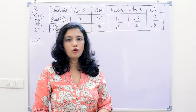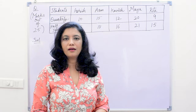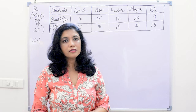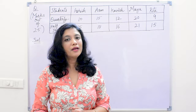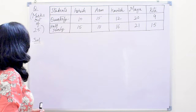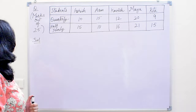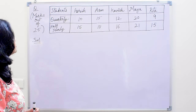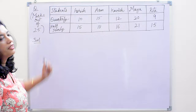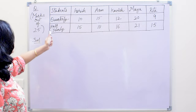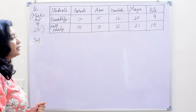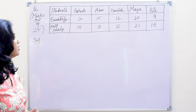Now we will study about the double bar graph. What is a double bar graph? When we plot two datasets on the same graph, it is called a double bar graph. We are given a question — these are the marks obtained by 5 students in quarterly exams and in half-yearly exams. In both the exams the marks are out of 25, and we have to plot these on the graph.